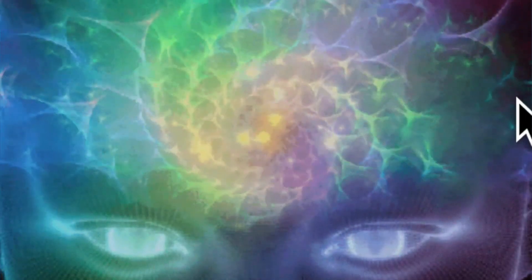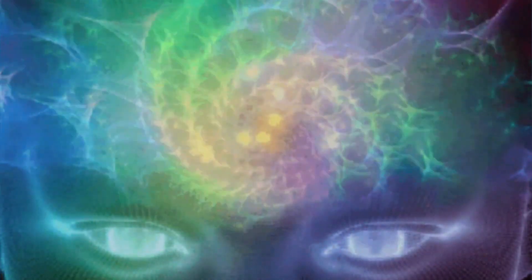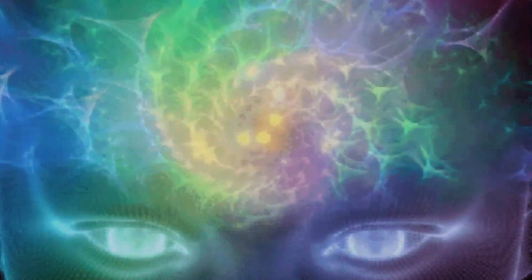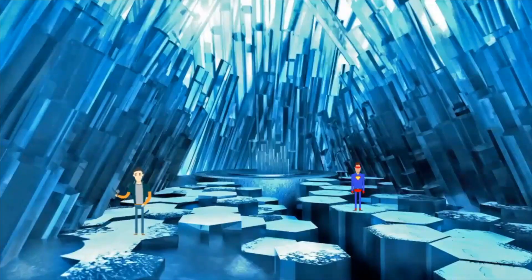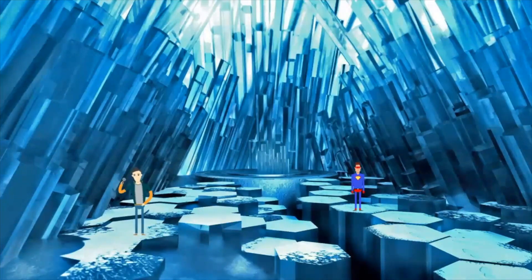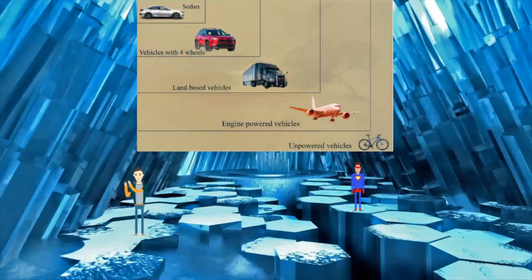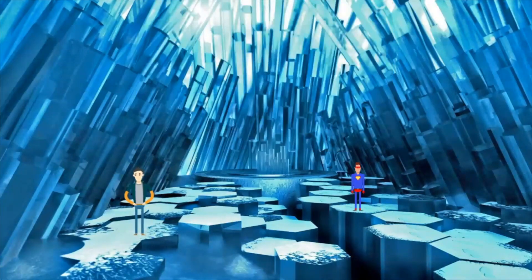Remember, the Bible in Genesis tells us that we are made in the image of God. This means that there is something about us that reflects the divine. We should be able to get an idea into how God may have designed the biological world simply based on the way we as humans, as engineers, design and build things.